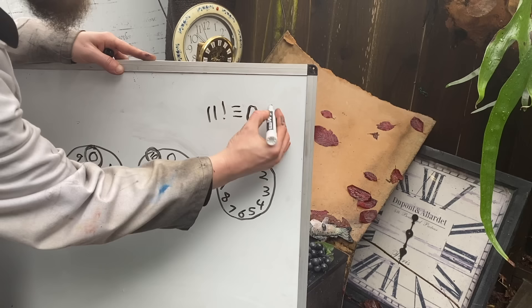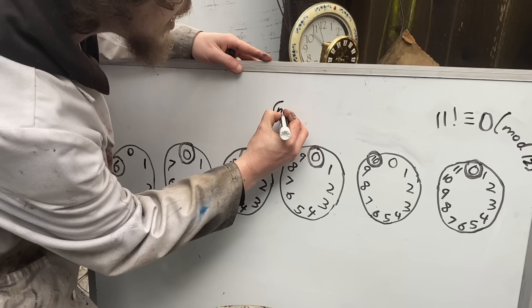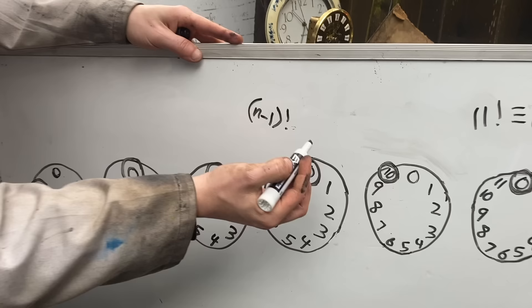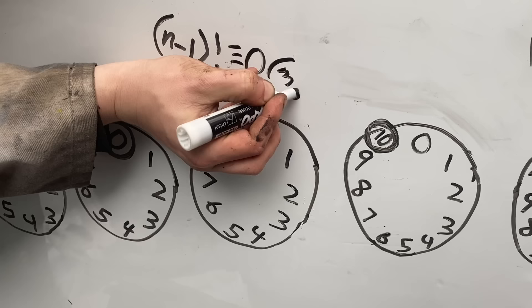That's pretty similar to all these cases where we found that some n minus 1 factorial, n being the mod number or total amount of hours, n minus 1 being that largest number we'll see there that's not a zero, was congruent to zero in mod n. That was true on these composite cases.